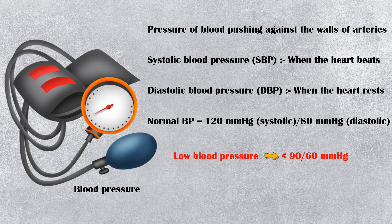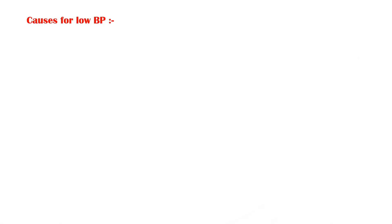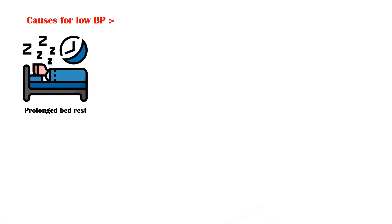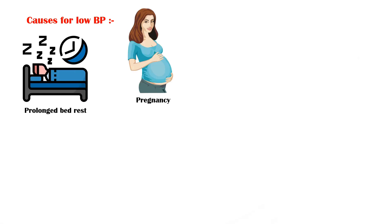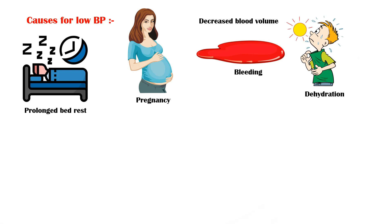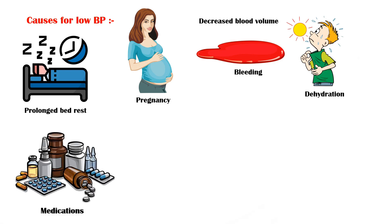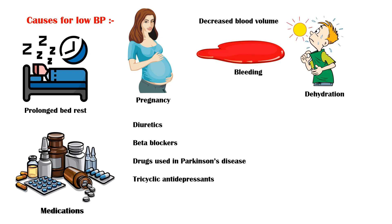Major causes of low blood pressure include the following: prolonged bed rest, pregnancy, decreased blood volume mainly due to bleeding and dehydration, and certain medications including diuretics, beta blockers, drugs used in Parkinson's disease, tricyclic antidepressants, drugs used for erectile dysfunction, narcotics, and alcohol.